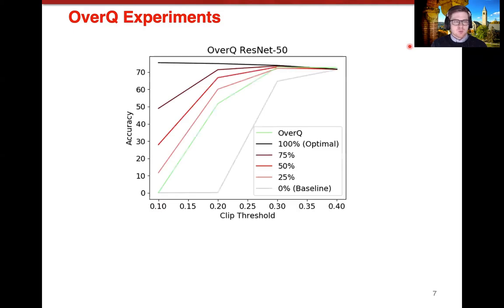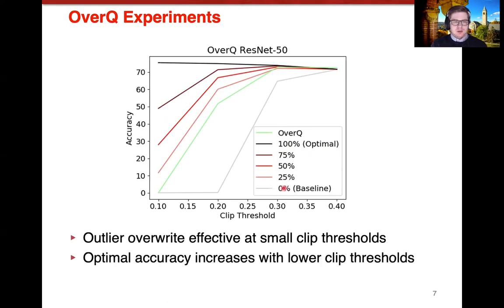I performed a few simple experiments on overQ. Here you could see it's on ResNet-50. The accuracy is on the y-axis with the clip threshold, the activation clip threshold, on the x-axis. I compare the overQ method against an optimal method where all the outliers are overwritten in the network, even if the zero or small value does not exist adjacent to that outlier. I scale down this optimal method to different grid points representing a fairly broad range of baselines for overQ to be compared against. 0% here is just standard quantization with no overQ. You can see that overQ is effective at small clip thresholds because at small clip thresholds, there are many outliers to be dealt with.